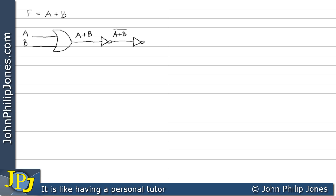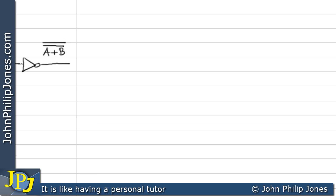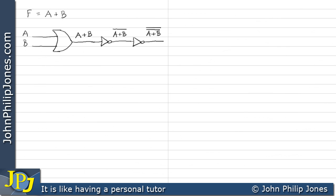If I take that into another NOT gate, I will have it notted twice, as we can see here. Let's consider the following combinations. A zero and a zero to the OR gate will give me a zero at the output. This will act as an input to the NOT gate to give me a one, which will then be converted back to a zero.